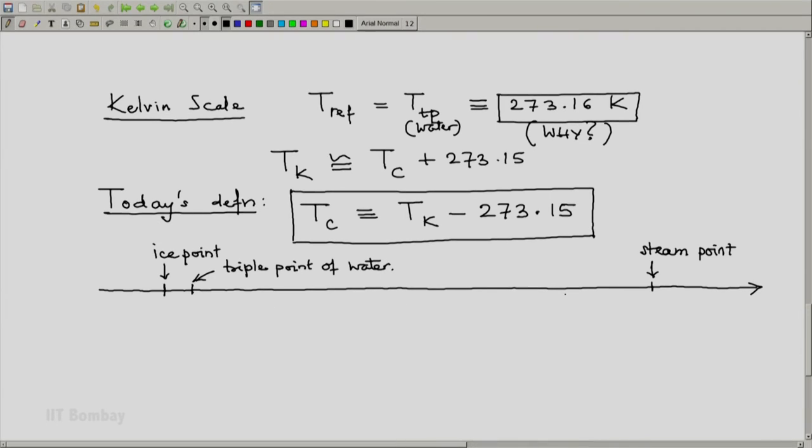Which one of these is exactly defined? This one. This one is defined to be 273.16 Kelvin. I am putting it in the block, indicating this is exact.